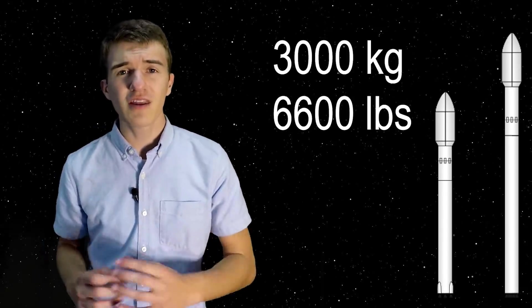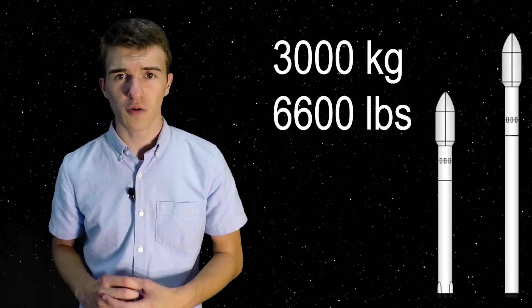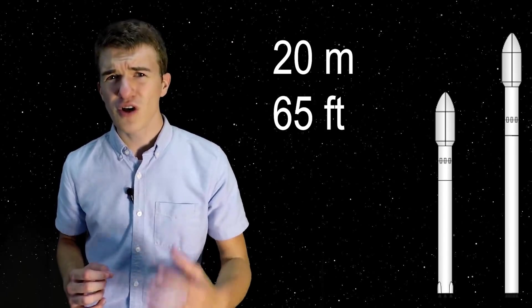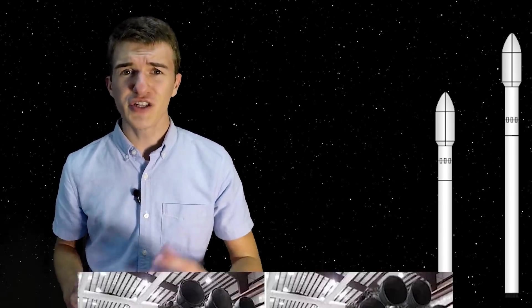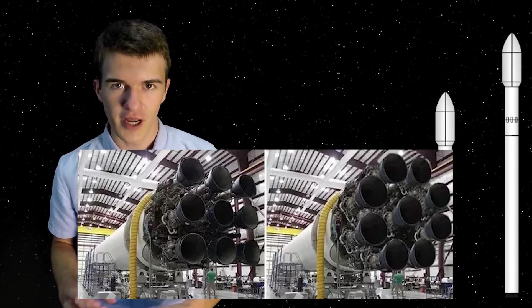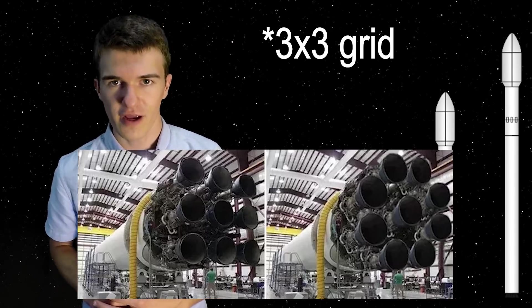Mainly that it was much more powerful, much bigger, and much stronger. It could take 3,000 more kilograms to low earth orbit, stood 20 meters taller, and had a different engine arrangement in its first stage, being an octoweb shape rather than a 9x9 grid. In addition, they replaced all the engines from the Merlin 1C to the Merlin 1D, thus making it just a much more powerful rocket altogether.